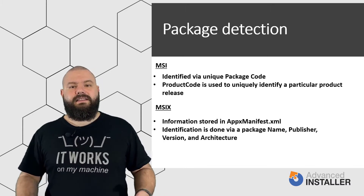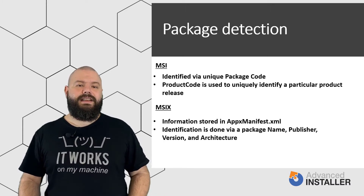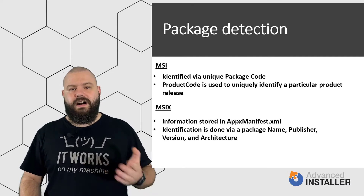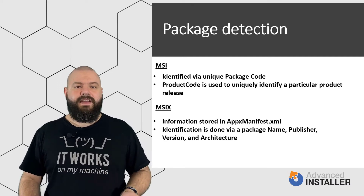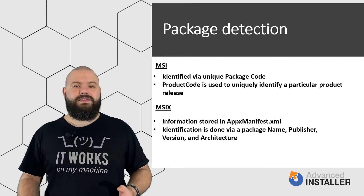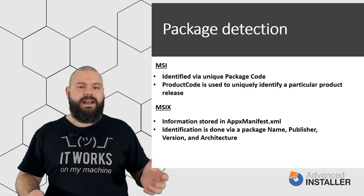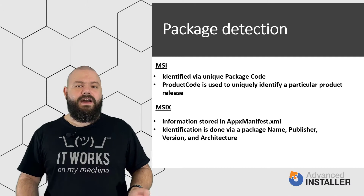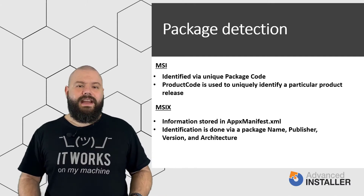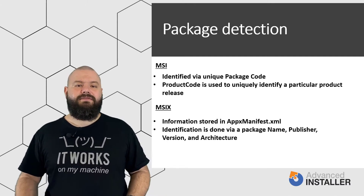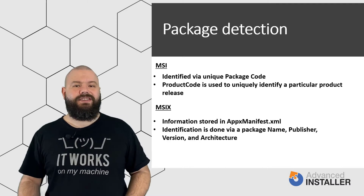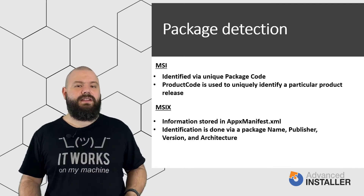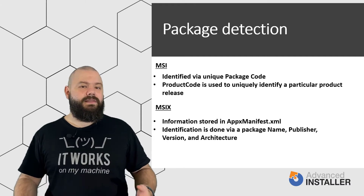MSIX identification is done by setting a package name, publisher, version and architecture. For example, two packages with the same name, publisher and version can be installed if the architecture is different. However, once a name and publisher have been selected for the package, they cannot be changed — otherwise, an upgrade of the previous version will not be detected and will not be applied.